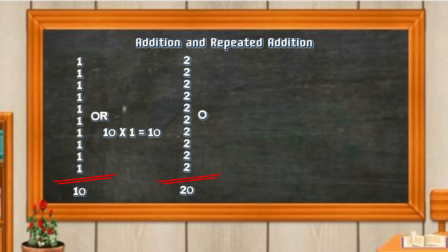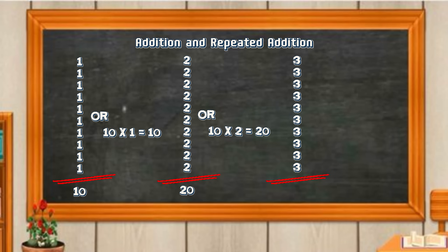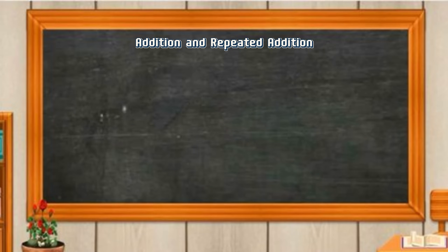3 plus 3 plus 3 plus 3 plus 3 plus 3 is equals to 30, or 10 times 3 is equals to 30. 4 plus 4 plus 4 plus 4 plus 4 is equals to 40.